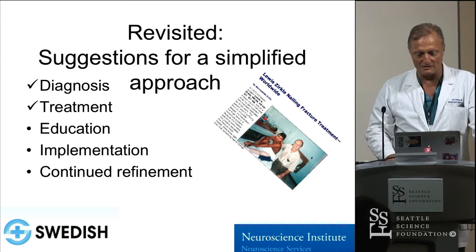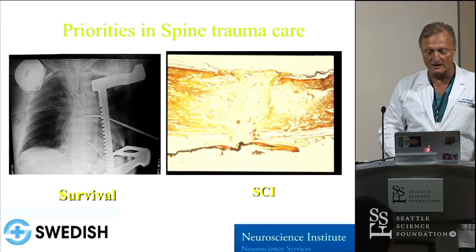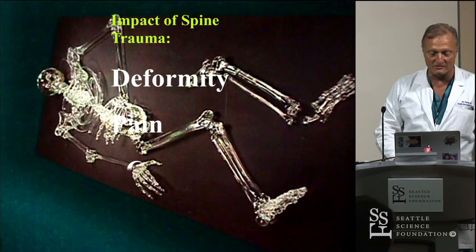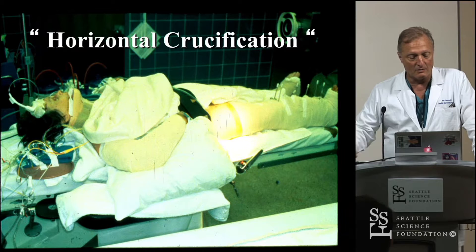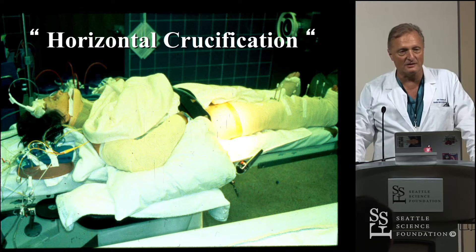Simplified approach in the spirit of Dr. Zirkel. In terms of spine trauma care, we are acutely connected to two elements: patient survival and spinal cord injuries. The outcomes of a broken spine are deformity, pain, spinal cord injury, and death. One of the classic problems of spine care is the horizontal crucification, leaving patients in a quagmire state, covered with bandages, unexaminable. All of us know that the best position for a polytrauma patient is getting them upright as soon as possible.